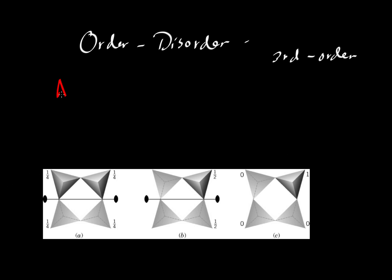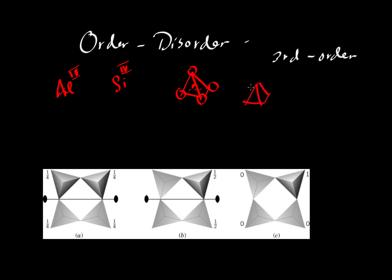Aluminum and silicon can both go into tetrahedral sites — both can go into a tetrahedron. We have an atom in the center bonded to four oxygens, and usually we just show the tetrahedron itself instead of the atoms. We can put an aluminum in there, which has a 3-plus charge, or we can put a silicon atom, which has a 4-plus charge.